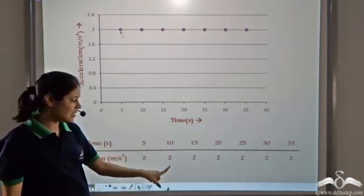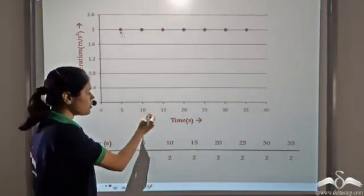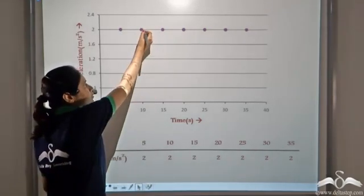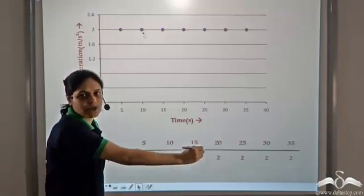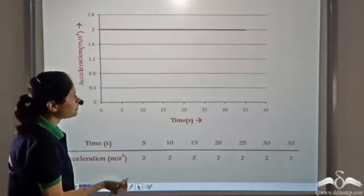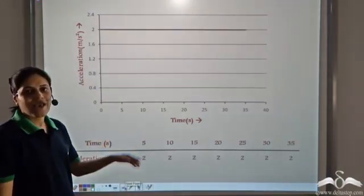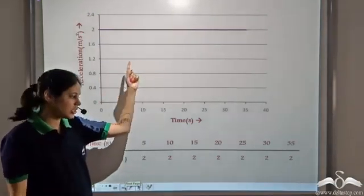At 10 seconds, acceleration is 2 m per second square. So at 10 seconds, we mark a point at 2 m per second square. We do this for all the points and then we join these points. And this is the acceleration-time graph.